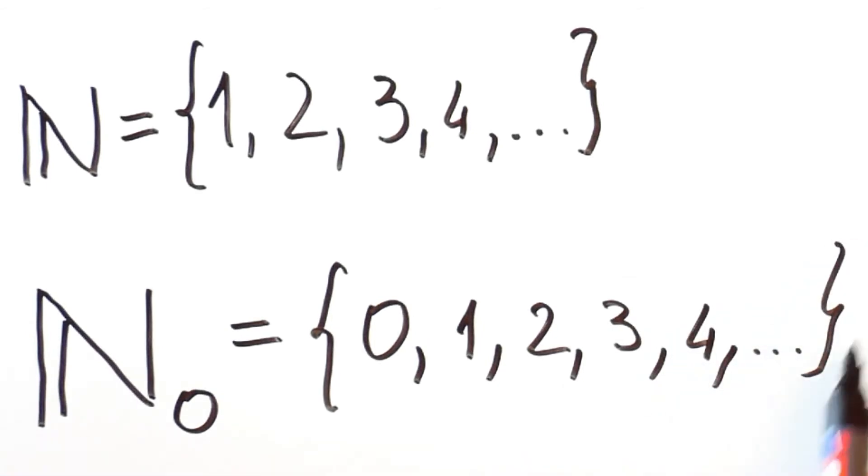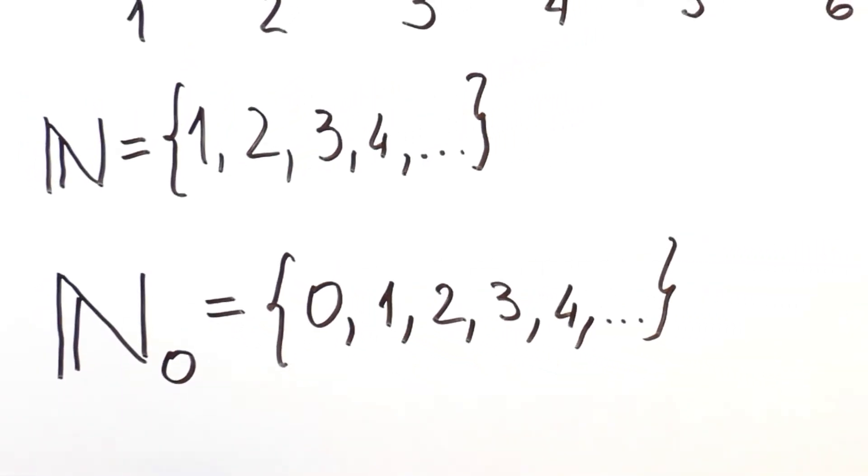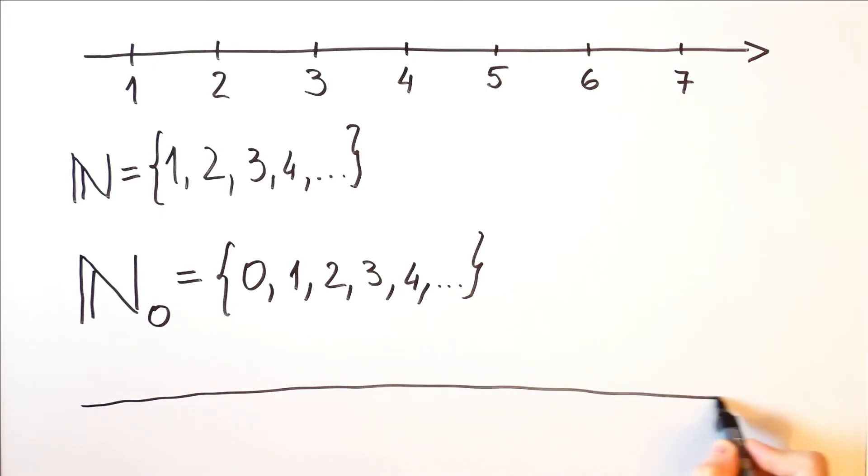The set of natural numbers with 0 can also be represented on a number line. The only difference is that we will start with 0.